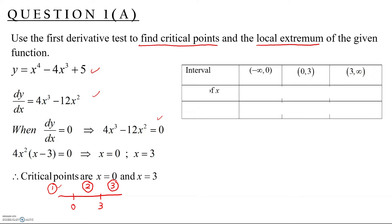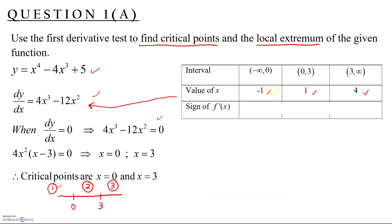We pick a test value from each interval and substitute into f'(x) to find the sign. We choose x = -1 for the first interval, x = 1 for the second, and x = 4 for the third. Substituting gives negative, negative, and positive respectively.